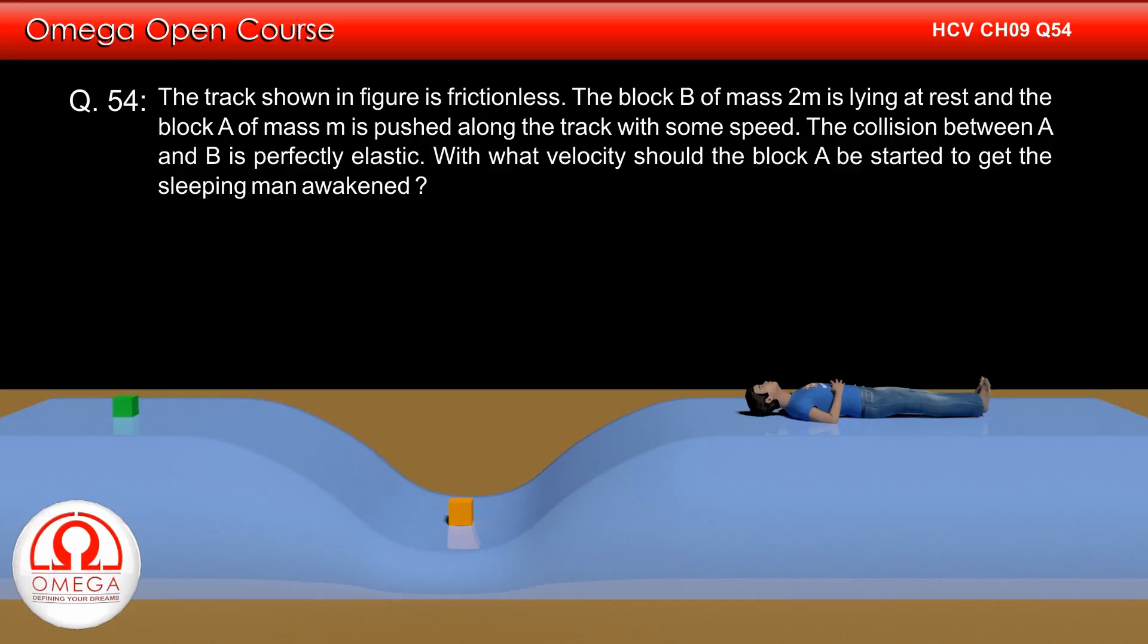The track shown in the figure is frictionless. The block of mass 2m is lying at rest and the block of mass m is pushed along the track with some speed. The collision between the blocks is perfectly elastic. With what velocity should the first block be started to get the sleeping man awakened?